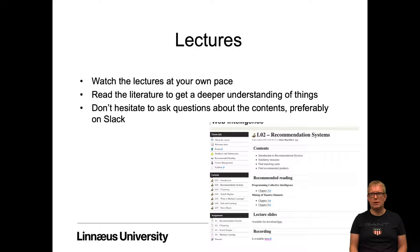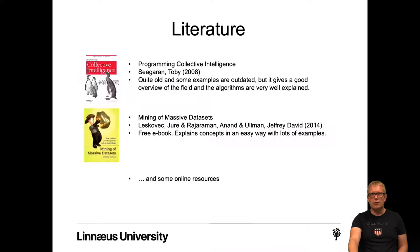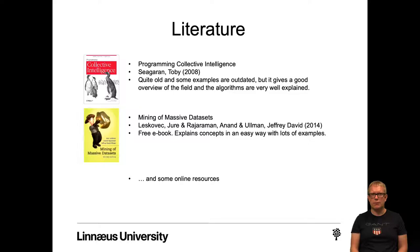Don't hesitate to ask questions about the contents, preferably on Slack. For all lectures you also have some recommended reading, lecture slides, and course recordings available. There are two books we have references to — they are not mandatory but recommended. Programming Collective Intelligence by Toby Segaran is quite old and some examples are outdated, but it gives a very good overview of the field and the algorithms are well explained. The other book, Mining of Massive Data Sets, is actually free and also explains concepts in an easy way. We also use a couple of online resources.